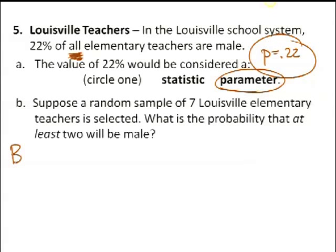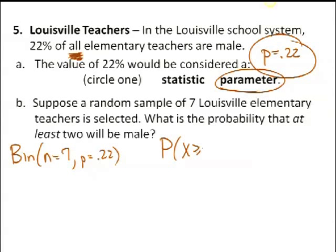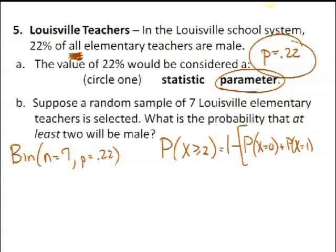How do I want to calculate P(X ≥ 2)? At least two means two, three, four, five, six, and seven—there are a lot of binomial probabilities to work out. What's not so much? The complement. The complement of at least two—P(X ≥ 2)—found the long way would include two through seven. So the complement is strictly less than two, which is only x = 0 or x = 1. So I need the probability of zero and the probability of one, then subtract from 1.